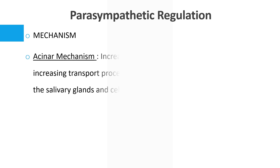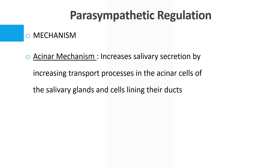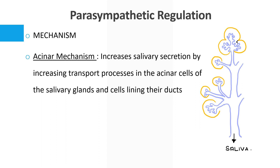The first mechanism by which acetylcholine increases salivation is the acinar mechanism. When acetylcholine is released to the salivary glands, there is increased transport across the acinar cells, so naturally more saliva is produced. It increases salivary secretion by increasing the transport processes in the acinar cells of the salivary glands and in the cells lining the ducts. That is one mechanism by which the parasympathetic system increases salivation.